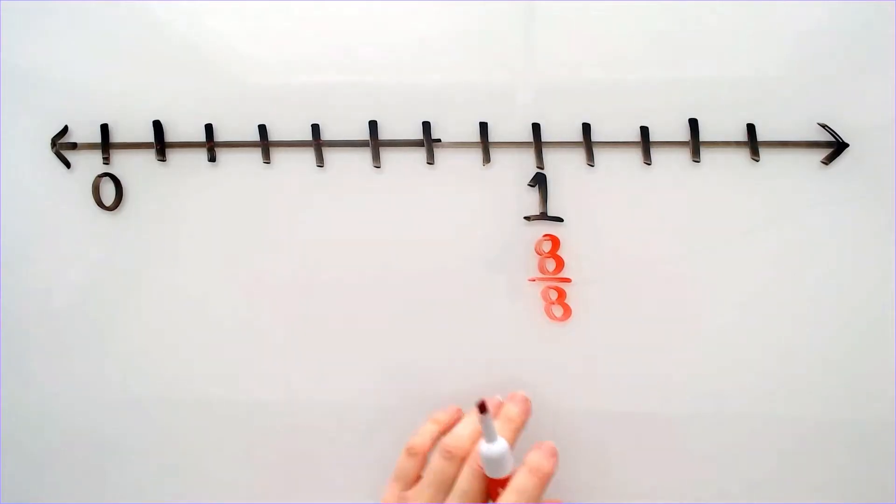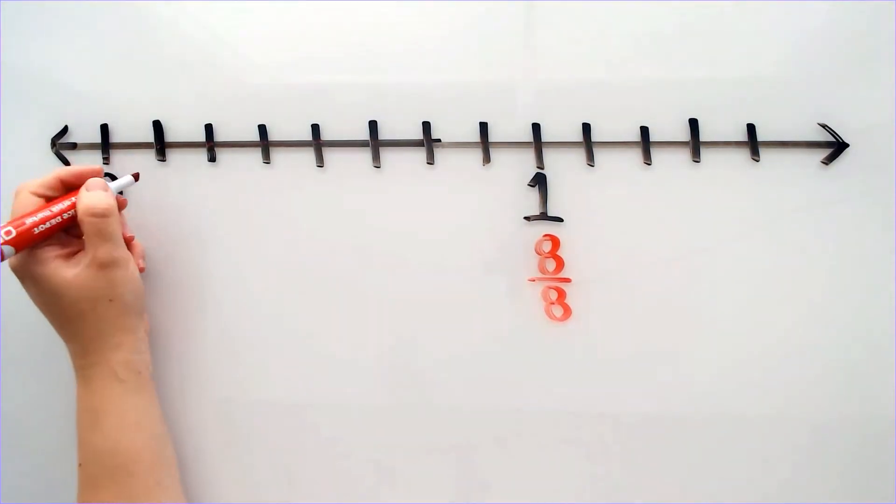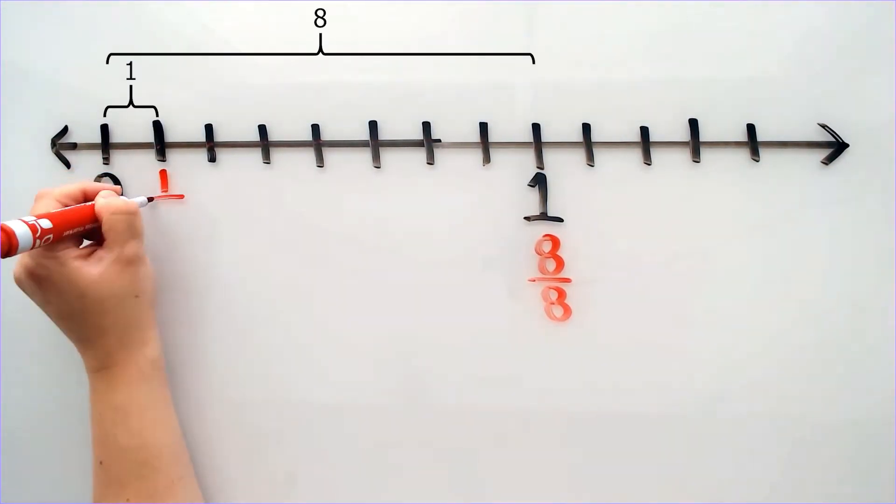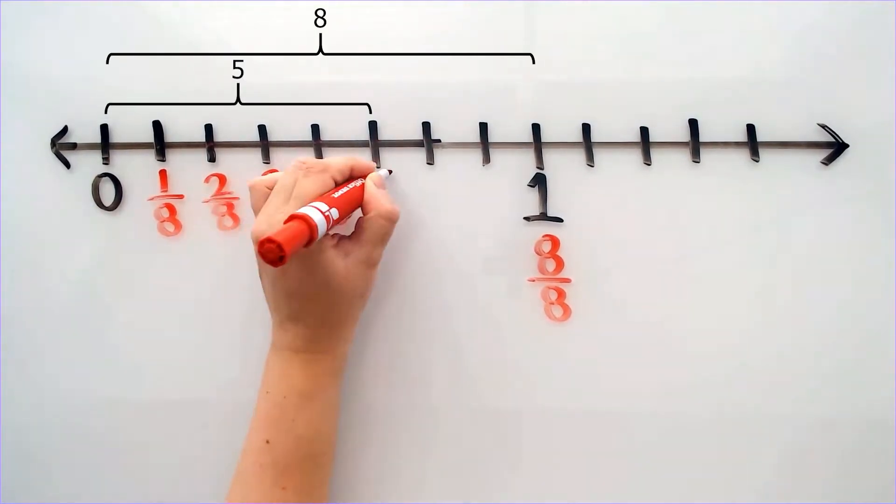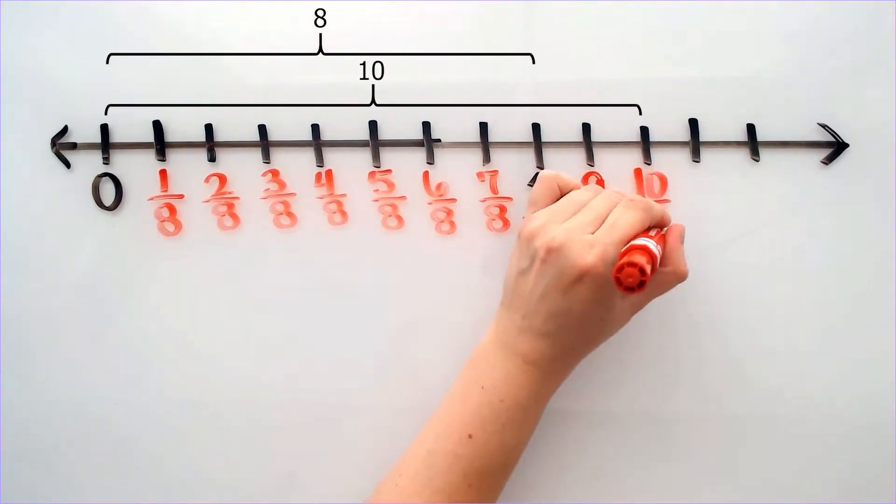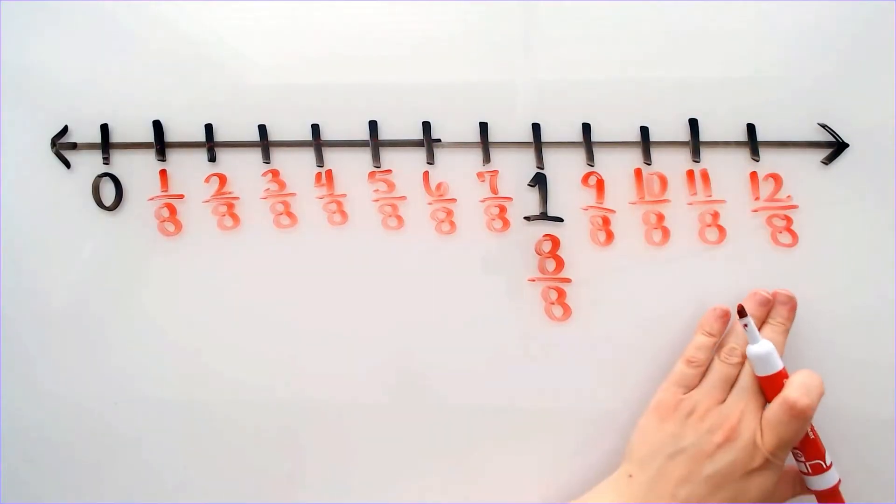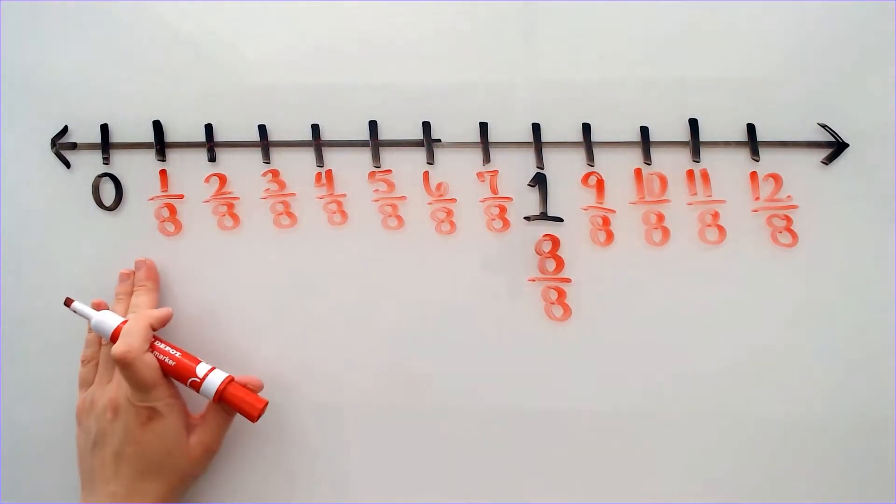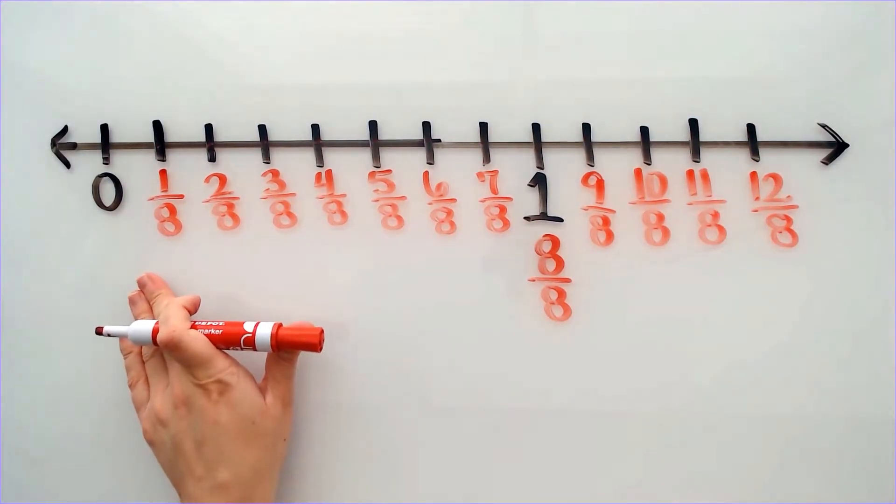Now I can fill in the rest of the number line. This is 1 out of 8, 2 out of 8, and so on. I am now going to go back and look at any fractions that can reduce.